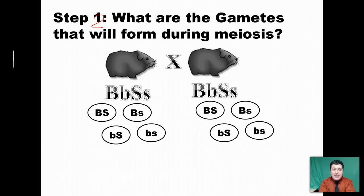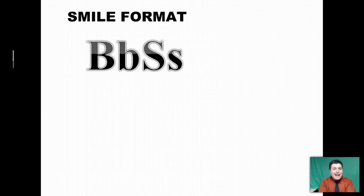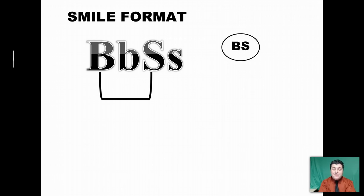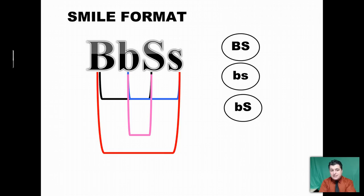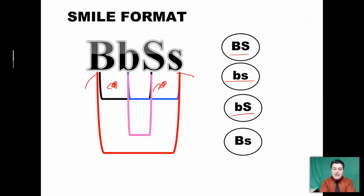Is there any easy way to make sure we're getting all possible combinations? I call this the smile format because in the end we're going to be building a little smiley face — and it resembles the FOIL process from math class. We start with our first two alleles: big B goes with big S — that gives us our first eyeball. Then we take the last letters: little b with little s — that's our second eyeball. Then the middle letters: little b and big S — that's our nose. And then the first and the last, big B and little s — that finishes our smiley face. This ensures we've got every single combination of alleles.